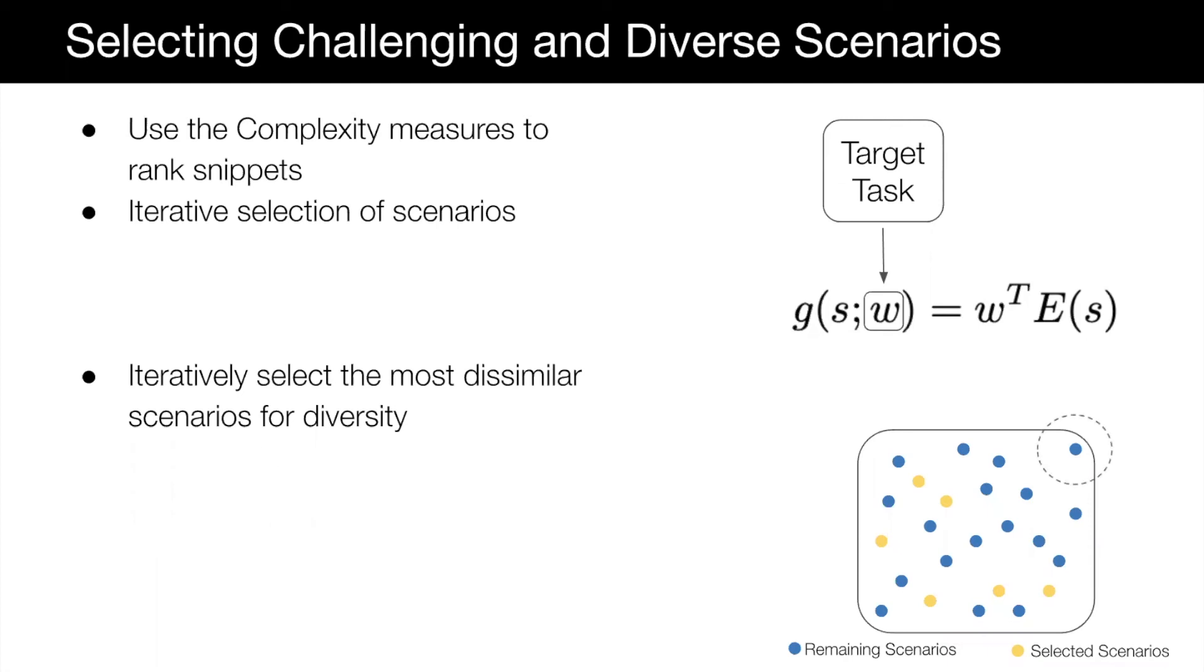For this, we iteratively pick the most dissimilar example from the unselected set, shown as blue dots, to the set of selected scenarios, shown as yellow dots. The dissimilarity is defined based on the computed complexity vector of the scenarios.